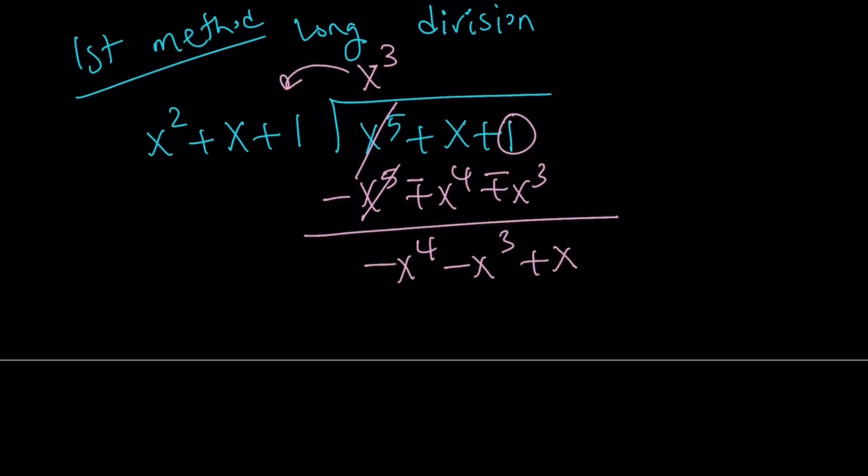Now, I want you to look at the largest degrees. x squared goes into negative x to the fourth how many times? The answer is negative x squared. That's going to give me negative x to the fourth minus x cubed minus x squared. Again, the negation will happen, and we're just going to add, giving us some zeros here and there.